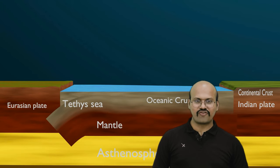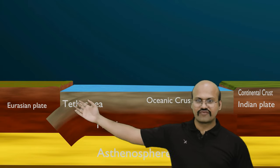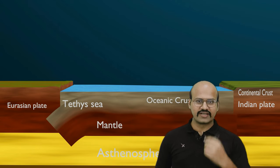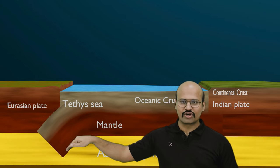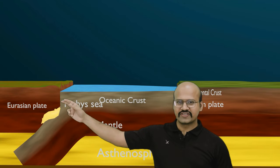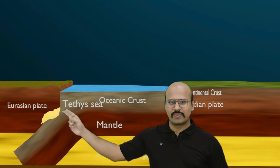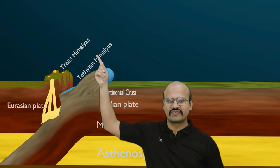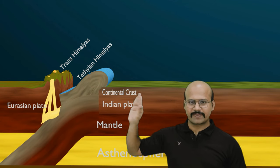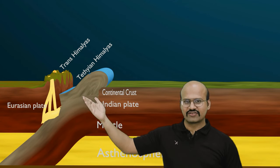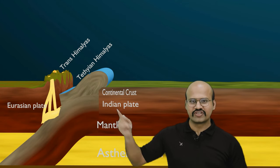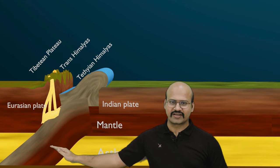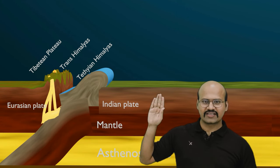Now here we can see the process of formation of Himalayas in cross-section. Between the Eurasian plate and the Indian plate we have the Tethys ocean crust. Because the Indian plate is moving northward, the Tethys ocean crust subducts since it is heavier than the Eurasian plate. This causes magma to form and reach the surface of the continental plate, creating volcanic mountains — the Trans-Himalayan mountains. Some part of the Tethys ocean crust is also squeezed upward and unfolded, forming the Tethian Himalayas.